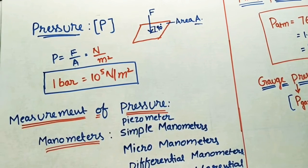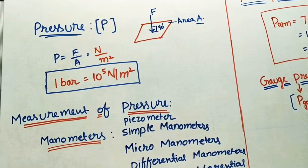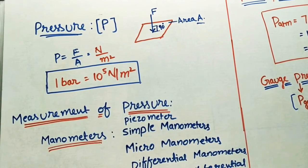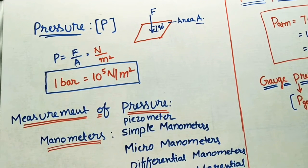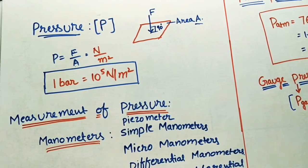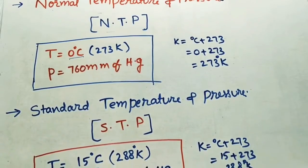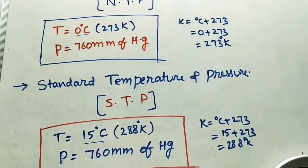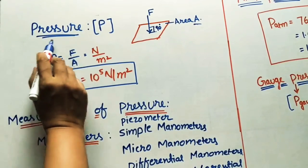In today's class we will discuss about thermodynamics: what is pressure, what is atmospheric pressure, what is gauge pressure, what is absolute pressure, and what is absolute zero pressure. We will also study what is NTP condition and what is STP condition. Let us take them one by one.